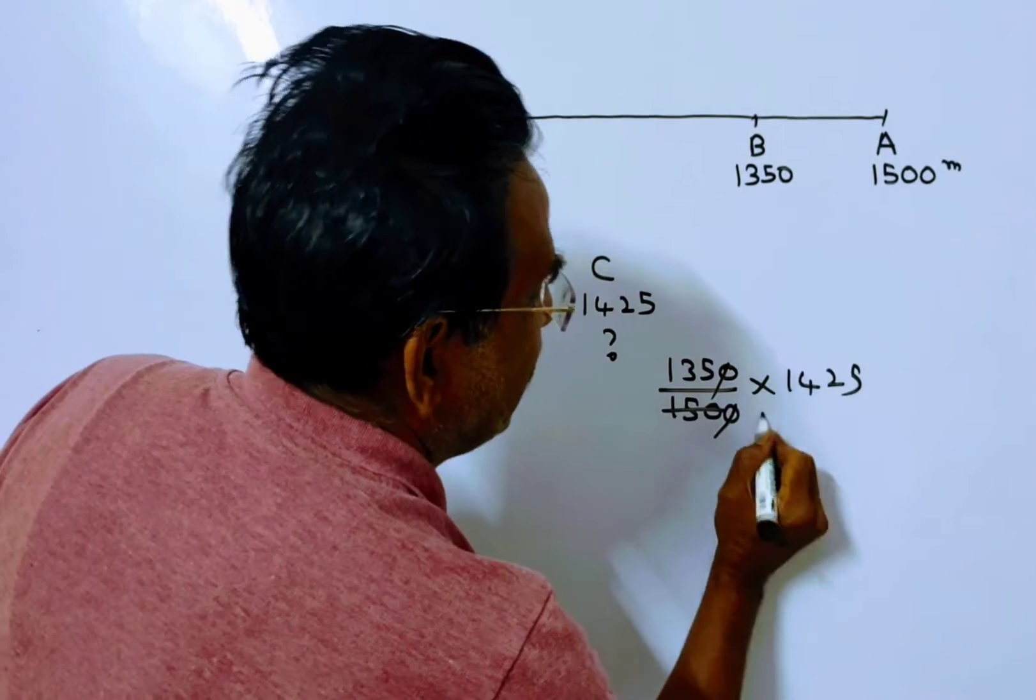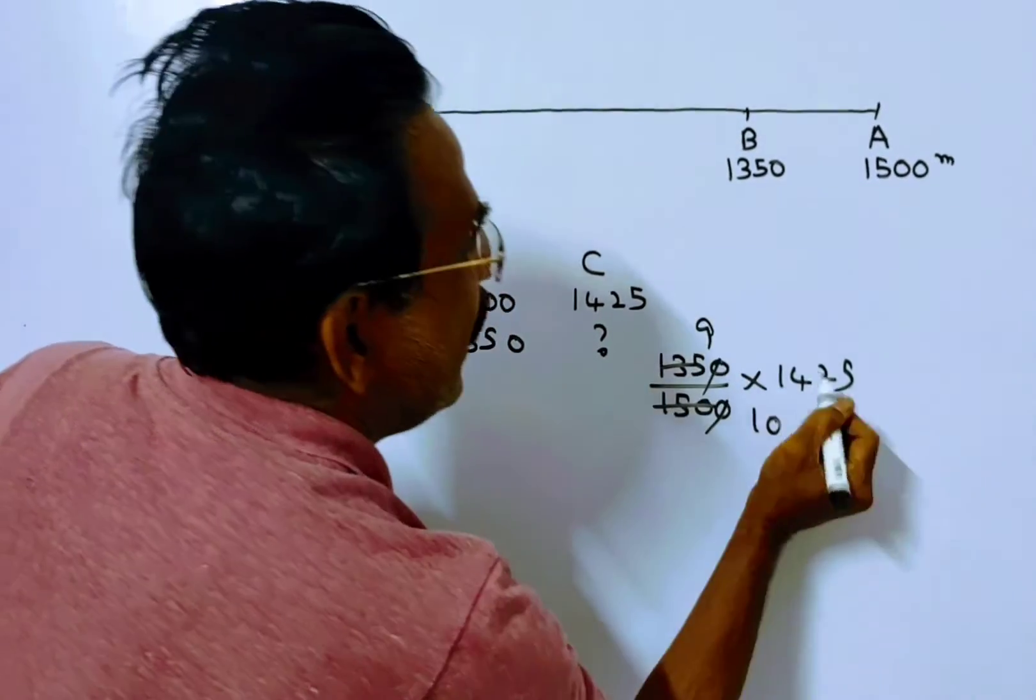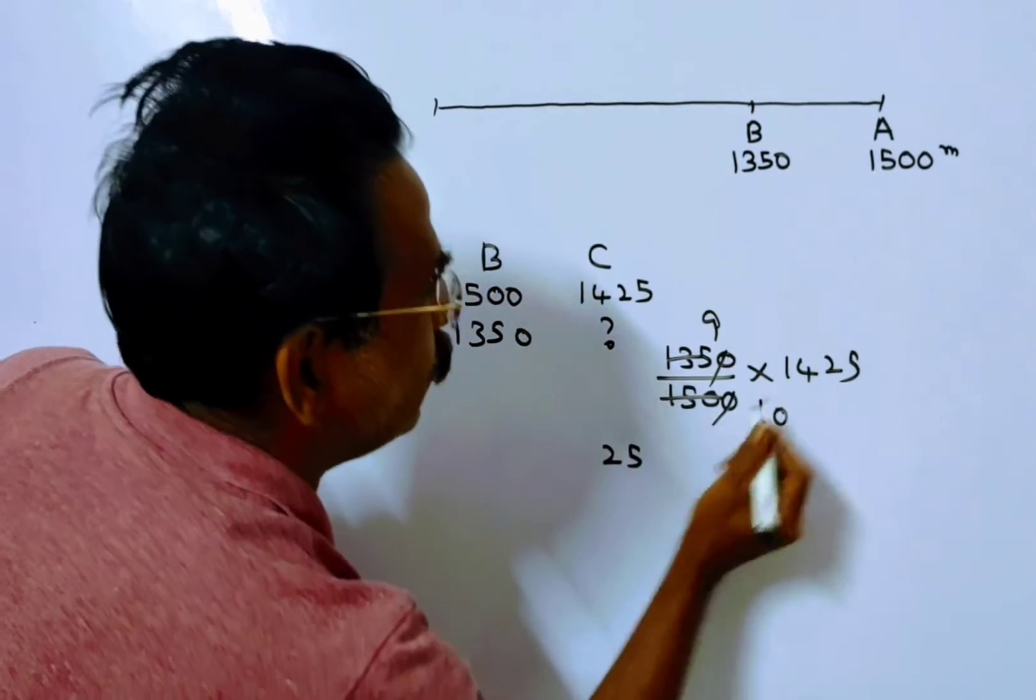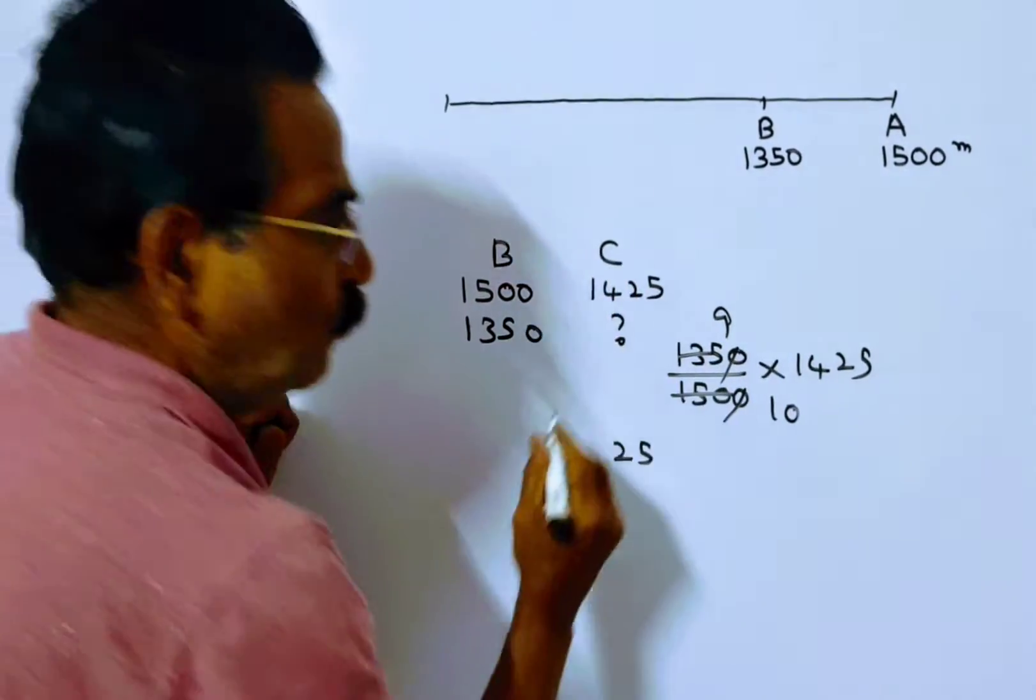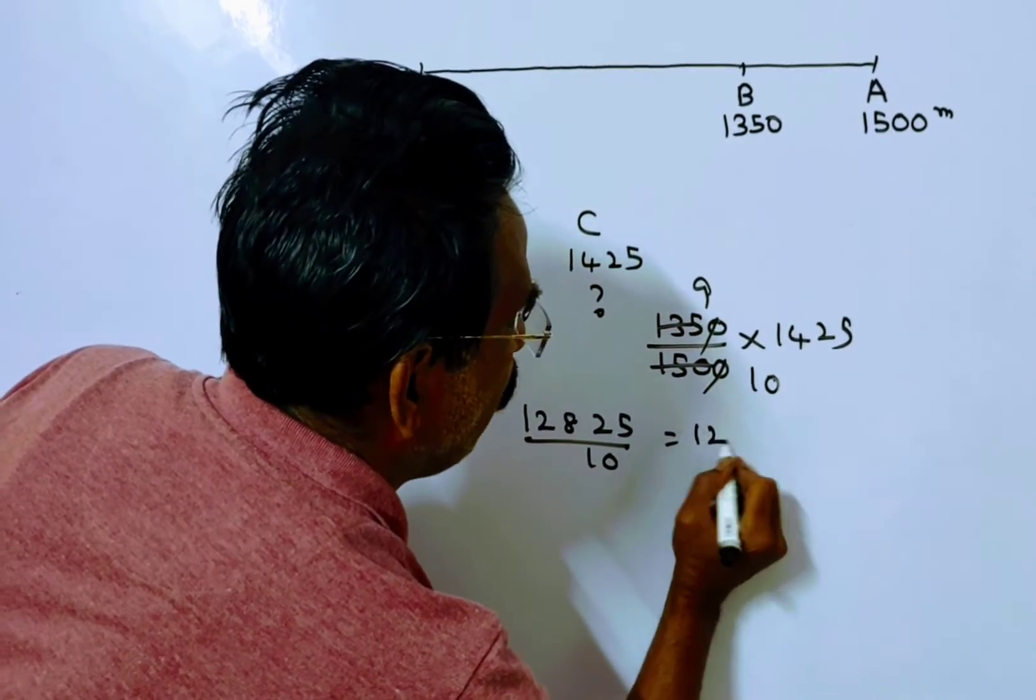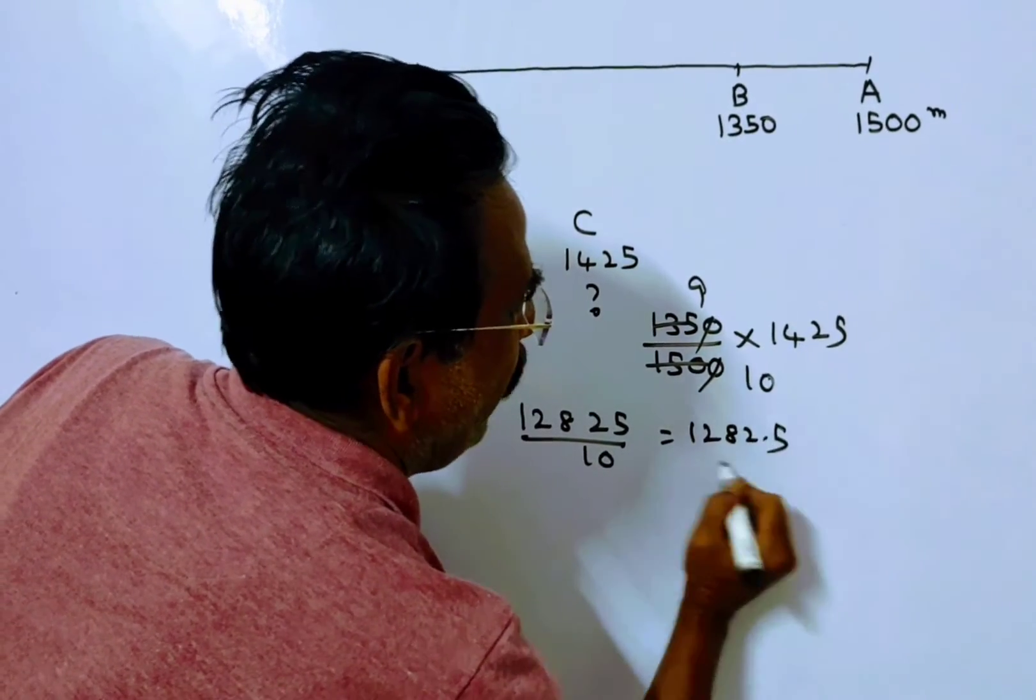Friends, 15, 10, 15, 9 into 14, 25, 9, 25, 225, 2, 9, 14, 126 plus 2, 128, 128 by 10, that is equal to 1282.5 meters.